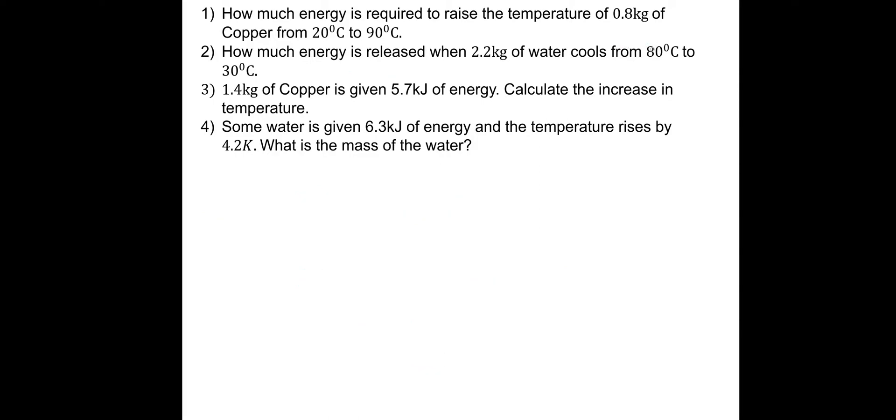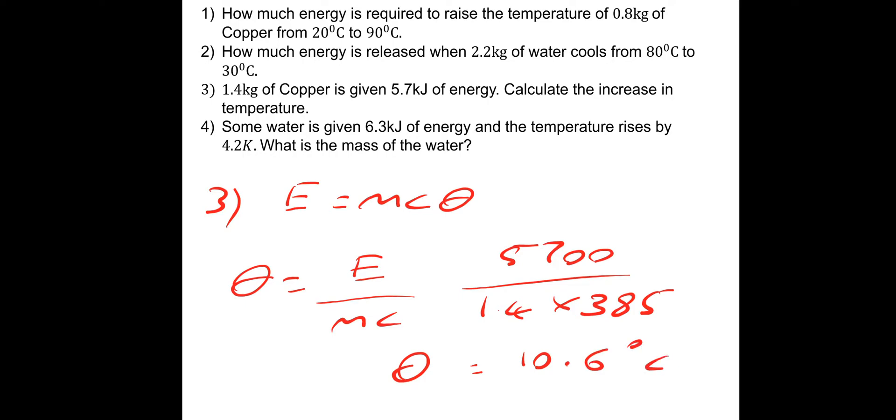Number 3. Calculate the increase in temperature, so it's E equals mcθ yet again. But we're going to do increase in temperature, so change in temperature is E divided by mc. It's just the matter of putting the numbers in. 5,700 joules divided by the mass, which is 1.4, multiplied by the specific heat capacity of copper, 385. That gives a change in temperature of 10.6 degrees Celsius, or you could put 10.6 Kelvin, either or.